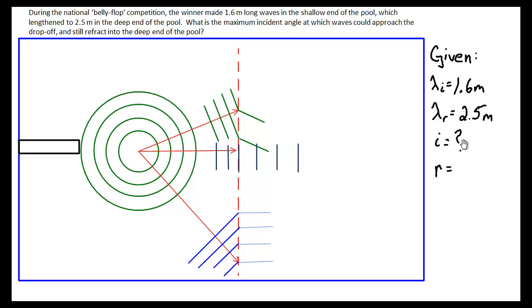We're trying to find the angle of incidence such that the waves approach the drop-off and still refract. Now the maximum possible angle of refraction. This is the trick to the question. When we're solving for the critical angle, we're trying to find the maximum possible refraction, which occurs at 90 degrees. So the trick is, all you have to do is put in r is equal to 90 degrees and go for it. I'm going to put a little star beside it. That's the trick when you're solving critical angle questions.